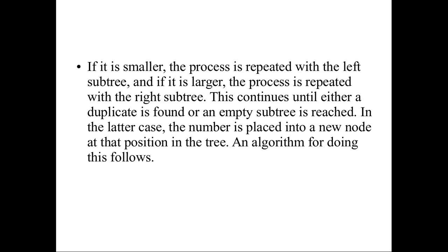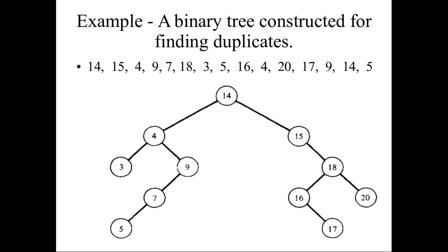A new node will be positioned according to the value of that number, either on the left side or the right side. The algorithm works as follows: first the root node is written, then the number is compared with the root node — if it is less, it is placed on the left side; if it is greater, it is placed on the right side.